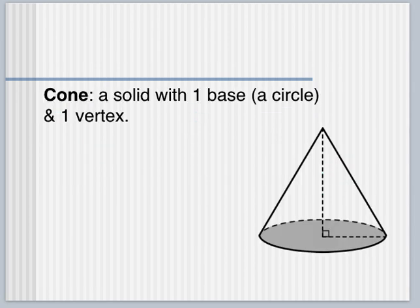Next we're going to talk about how to calculate the surface area of a cone. A cone is defined as a solid with one base that's a circle and one vertex. Notice how similar that is to the definition of a pyramid. A pyramid also has one base and one vertex. The difference here is that for cones, your base is a circle. So you could think of a cone as a pyramid with a circle base.